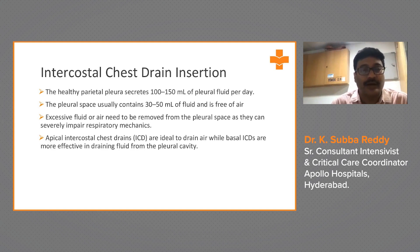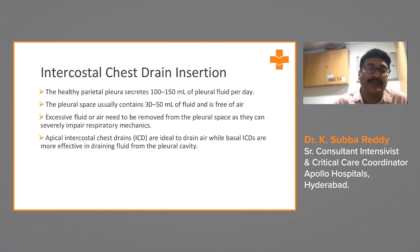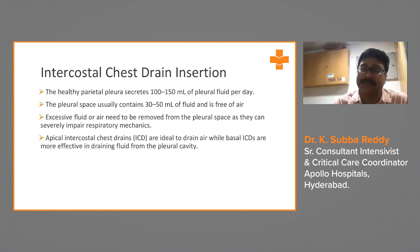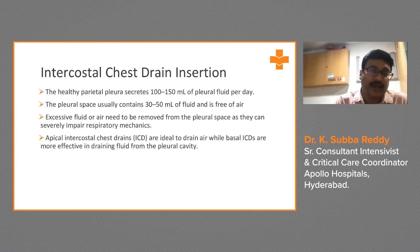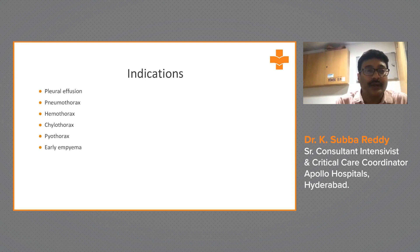Excessive fluid or air needs to be removed from the pleural space as they can severely impair respiratory mechanics. Apical intercostal chest drains are ideal to drain air, while basal ICDs are more effective in draining fluid. So if you are putting an ICD for pneumothorax, you put an apical drain; if for pleural effusion, you put a basal ICD.